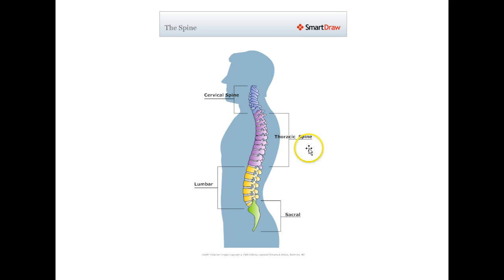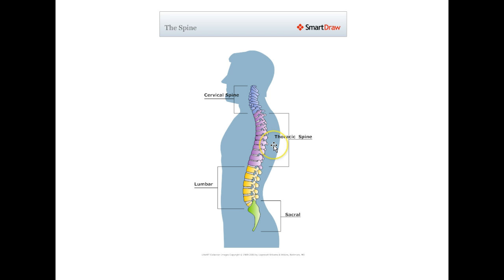Next, there is the thoracic spine. Here, your ribs are attached to form your rib cage, which helps to protect your heart and lungs. Overall, the thoracic spine is really quite rigid and does not allow a lot of movement.